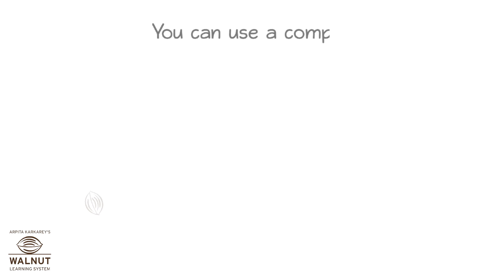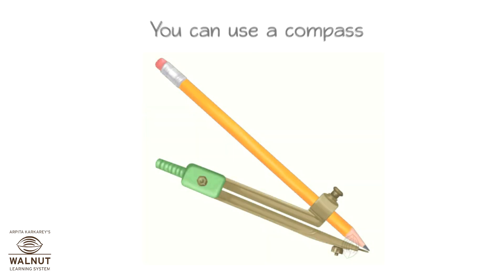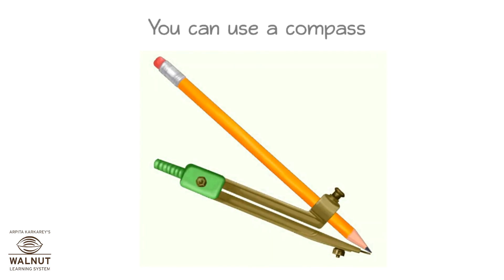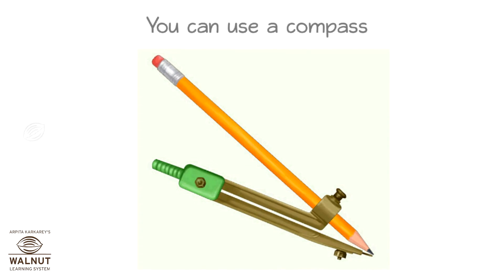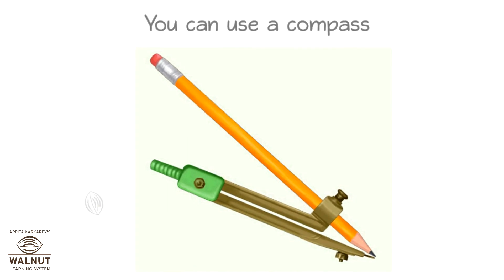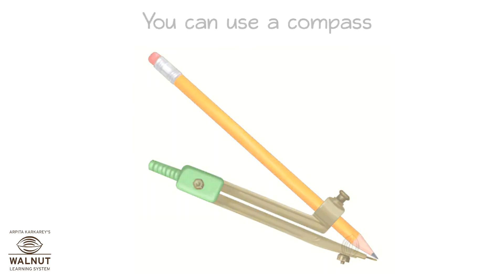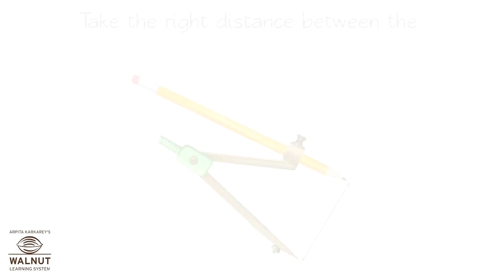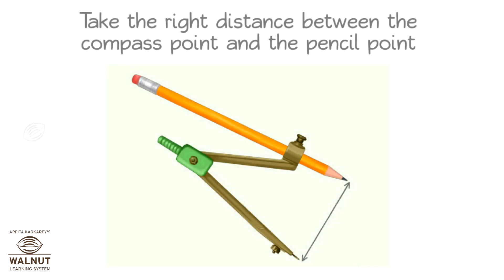You can use a compass. Fix your pencil in the compass so that the pencil point and compass point are at the same level. Take the distance between the compass point and the pencil point. This distance decides how big your circle will be. If the distance is more, your circle will be bigger. If the distance is less, your circle will be smaller.